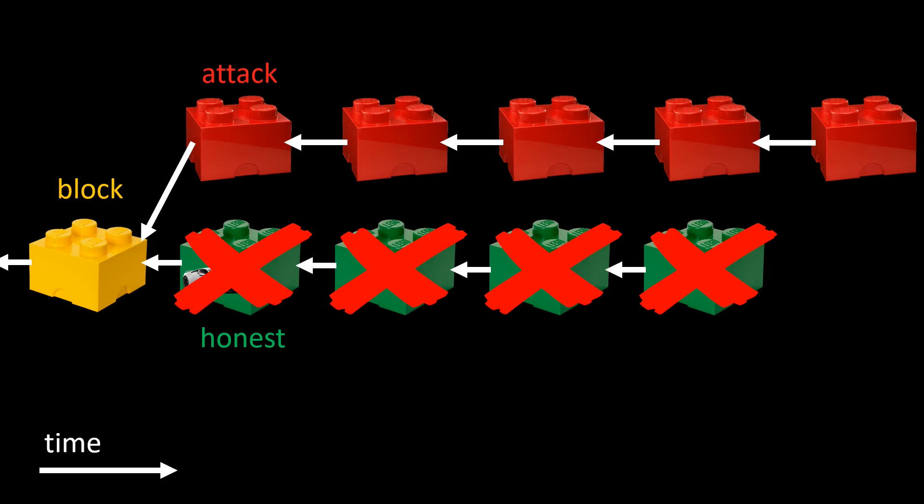The attacker may even include another transaction in one of their red attack blocks. This transaction spends the money to buy another supercar, or simply moves the money to a new account, making sure that the original car buying transaction is no longer valid. So in this scenario the attacker got away with a car without paying anything.